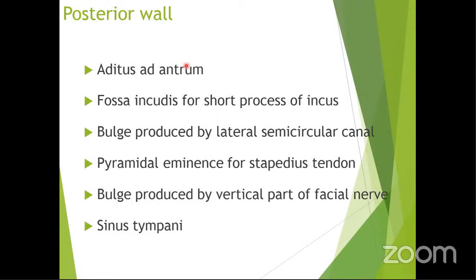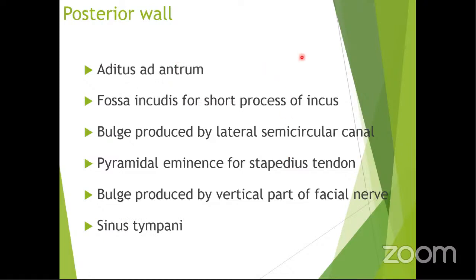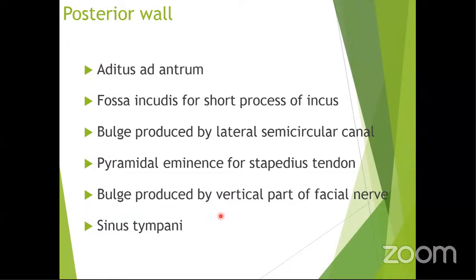Important points: the aditus ad antrum is the opening in the epitympanum connecting to the mastoid antrum. The fossa incudis is the area where the short process of the incus attaches. On the medial wall there is the pyramidal eminence where the stapedius tendon attaches, the vertical bulge of the facial nerve, and the sinus tympani.